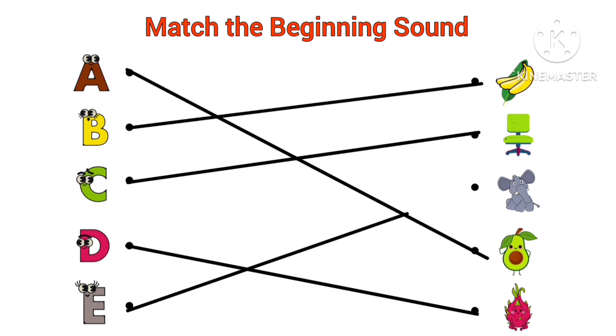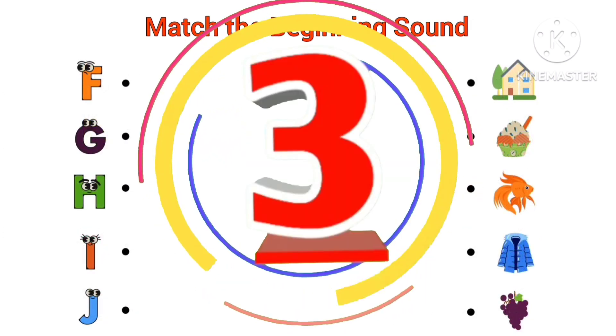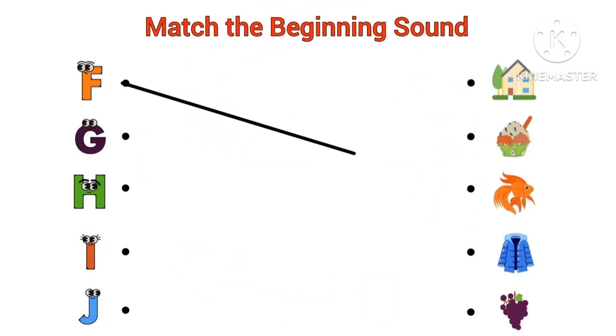E, E for elephant. Beginning sound of elephant is E. F, F for fish. Beginning sound of fish is F.